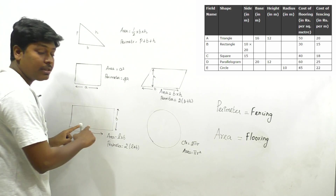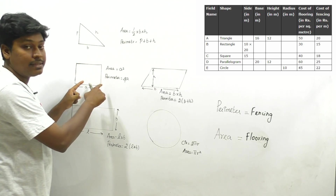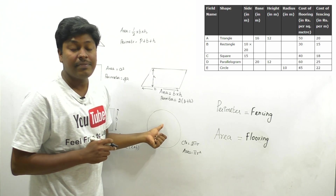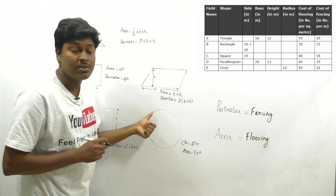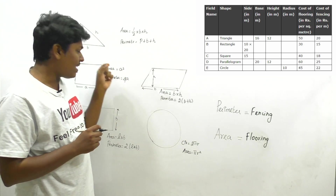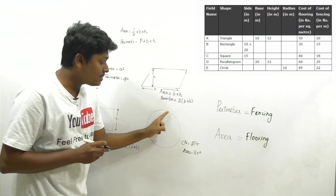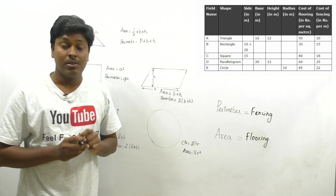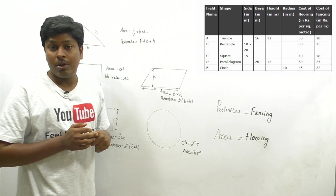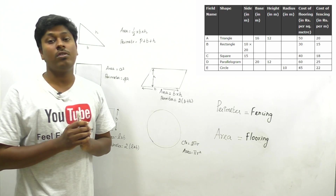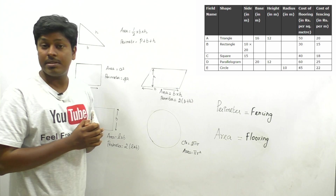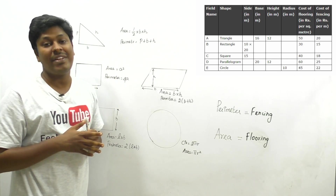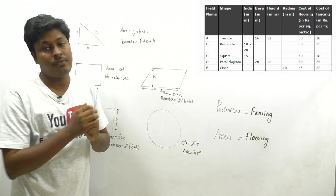For a rectangle, length and breadth form the perimeter, which is the fencing. For a square, the side is used for the perimeter. However, for a circle, fencing is called circumference — not perimeter. So fencing equals perimeter for polygons, or circumference for a circle. Know all two-dimensional formulas thoroughly before attempting the questions.